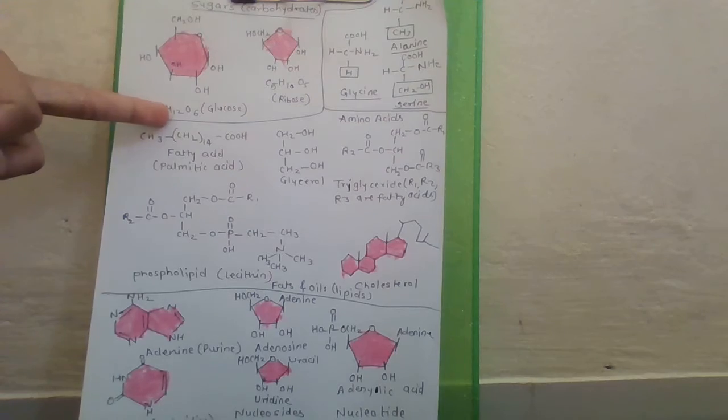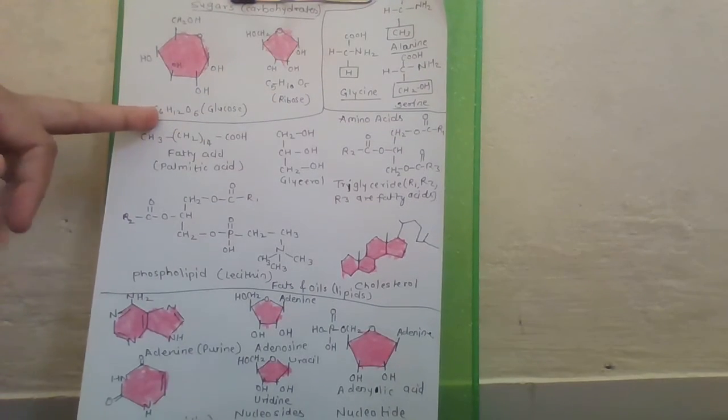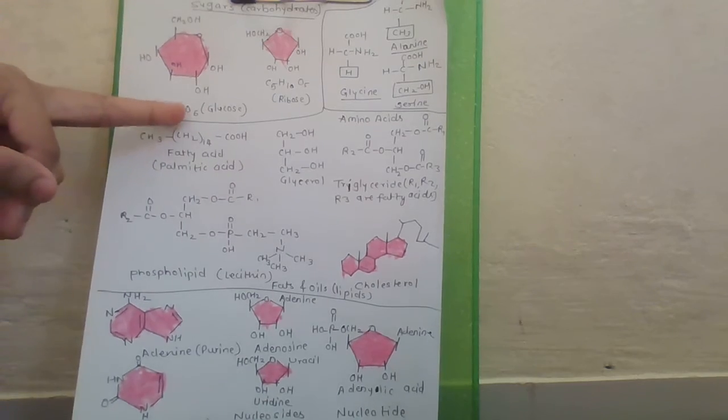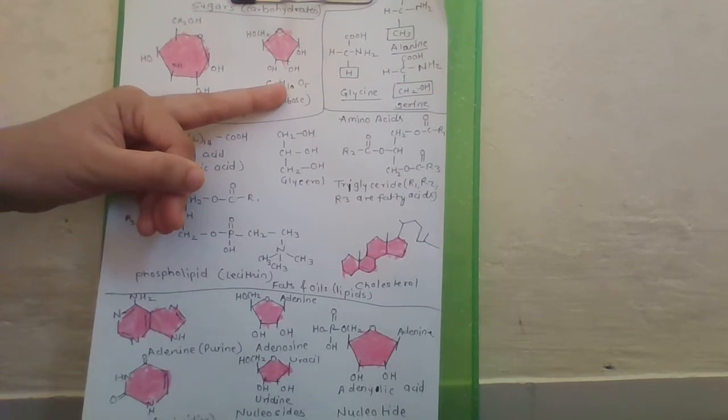Here is sugar in the form of glucose or ribose. Glucose structure is C6H12O6 and ribose structure is C5H10O5.